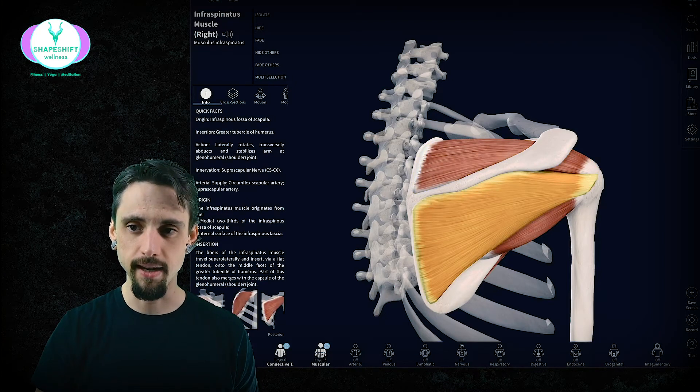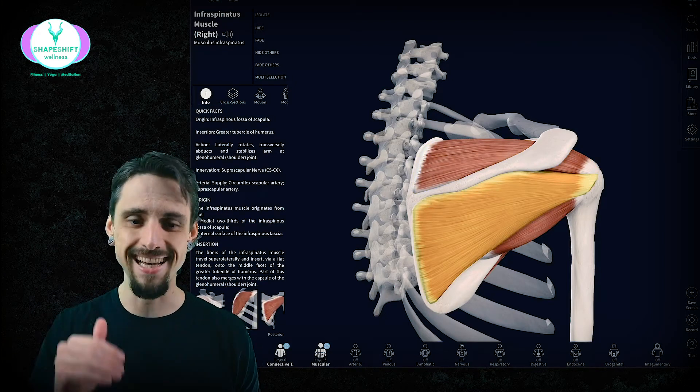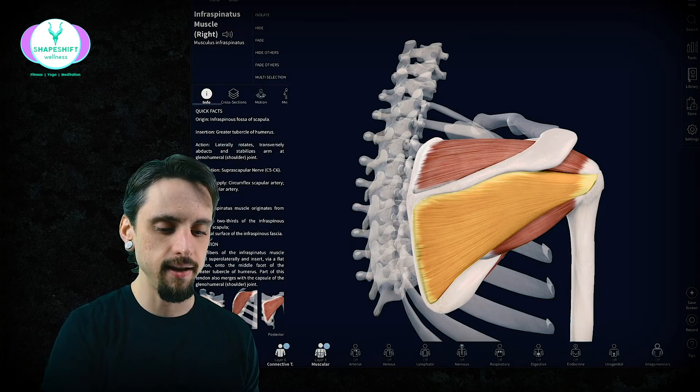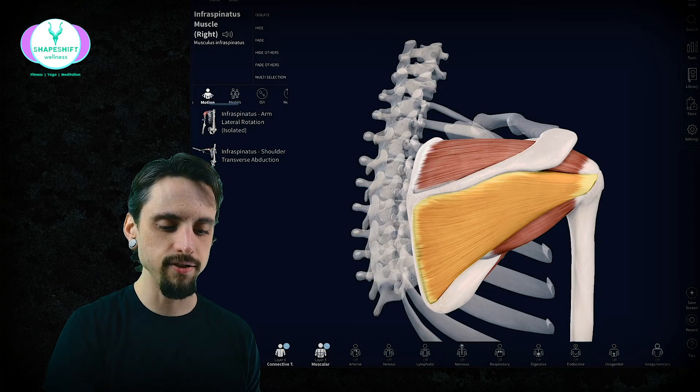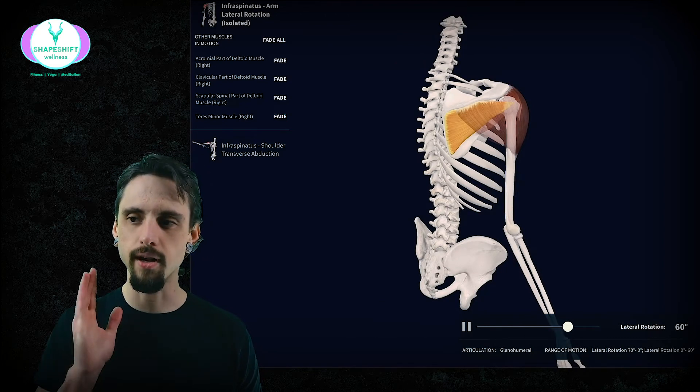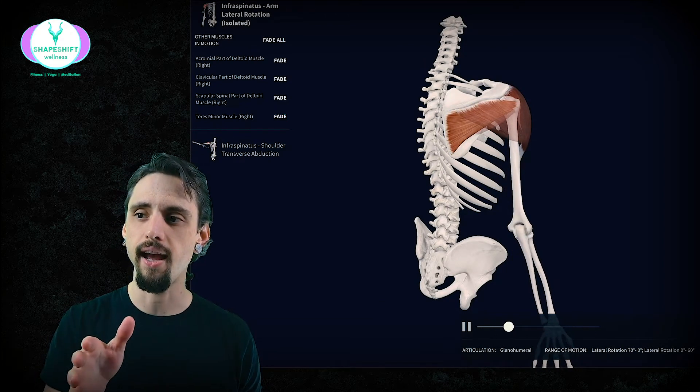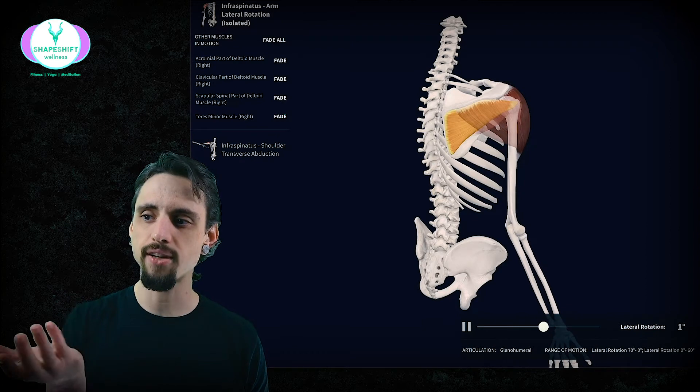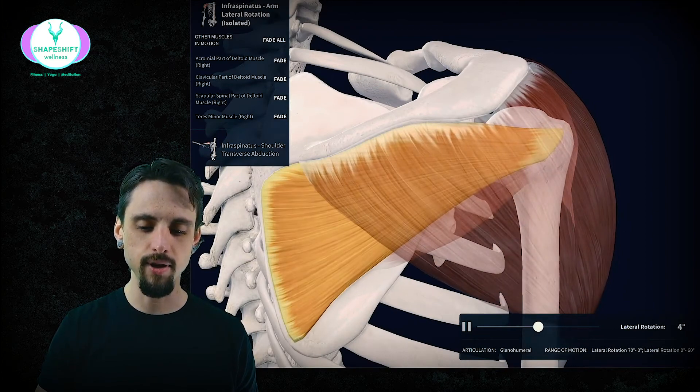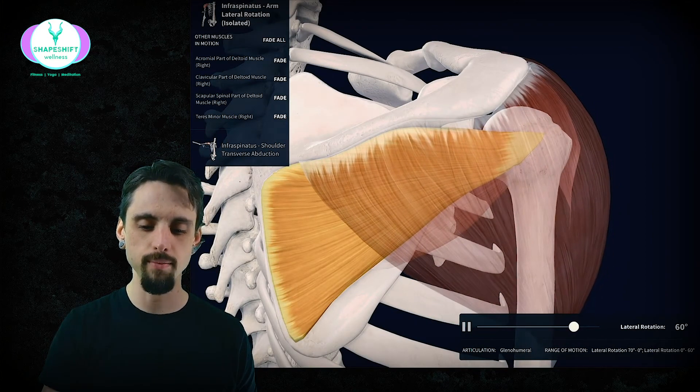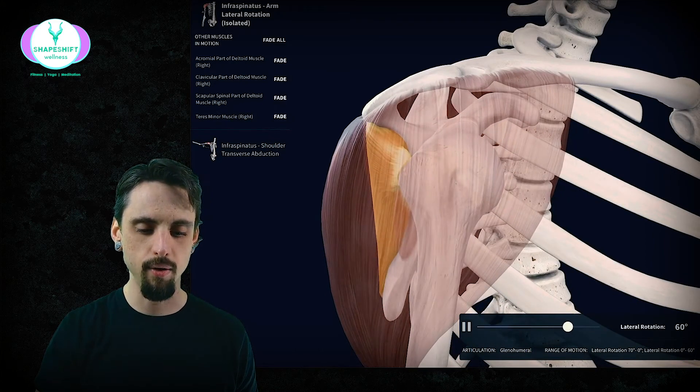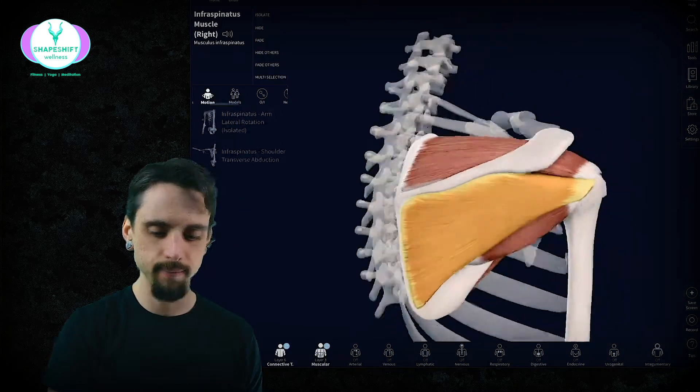Next muscle. So the function of supraspinatus is abduction. Next is infraspinatus—remember we're just going down the acronym SITS. I for infraspinatus lives below the spine of the scap, and its primary motion on its own is lateral rotation of the humerus. We're again looking at this person from the back, and you can see when it contracts it externally rotates. So it's rotating the humerus externally. Now let's zoom in and let's just look at it again contracting. It's just pulling on that greater tubercle.